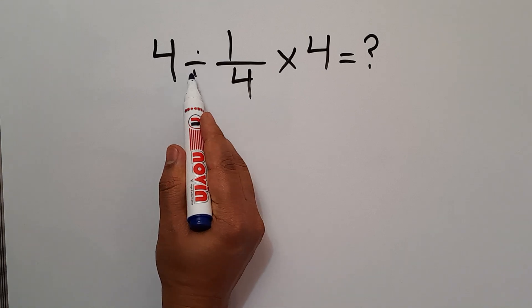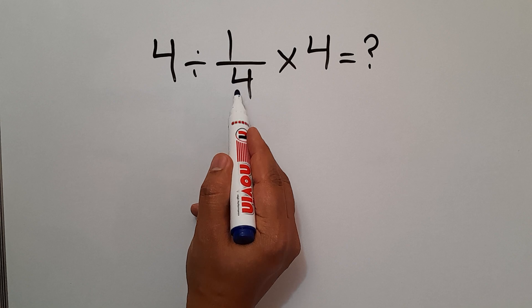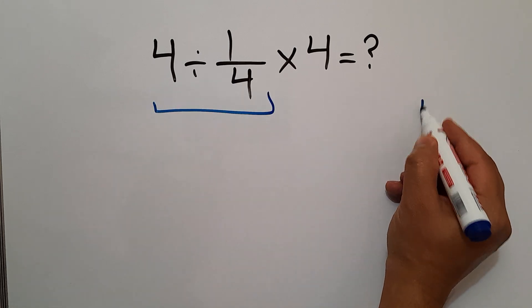this division, 4 divided by 1 over 4. According to the KCF rule,